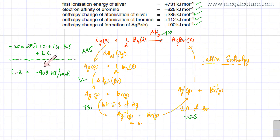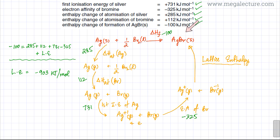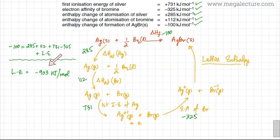One way to check whether the answer is correct: lattice enthalpy is always exothermic, so the sign should always be negative. The value should typically be somewhere around 1000 to 3000 or 4000 kilojoules per mole. AgBr has a relatively weak lattice — Ag plus one and Br minus one with a plus one/minus one charge won't have extremely strong attraction — so minus 903 looks correct. Always double check your calculations and verify the answer is logically consistent.